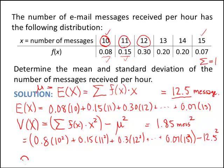And the standard deviation, we use sigma. That's just going to be the square root of the variance. So in this case, if I take the square root of 1.85 messages squared, we get approximately 1.36 email messages per hour.